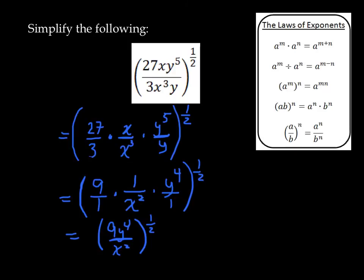So I started this problem. I haven't finished it yet. Here's what I did. I broke down into three separate factors, our big fraction, and we see that they're just three separate small problems. 27 divided by 3, which gives us 9 over 1.